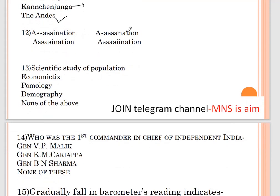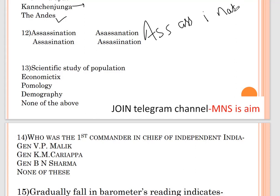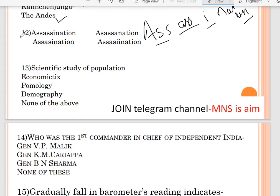Question number twelve: correct spelling of 'assassination'. You can remember a trick: A-S-S-I-N-nation. So assassination is spelled S-S-I-N-nation. Option A is correct.